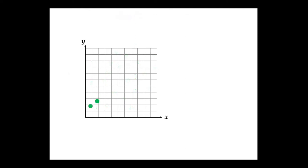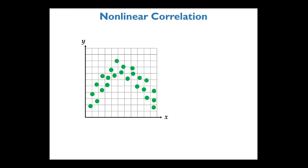There are also scatter plots that show a clear pattern but not a linear one — that's a nonlinear correlation. There is a correlation, but it's nonlinear, meaning it's not a line. We're not going to look at those in this class.